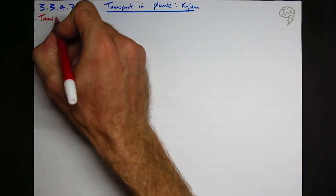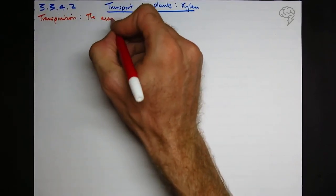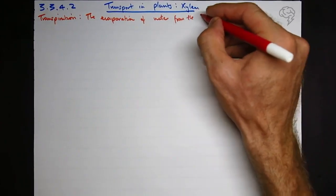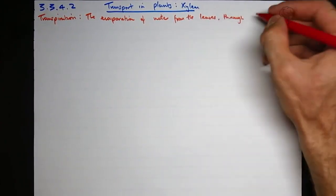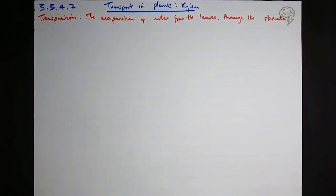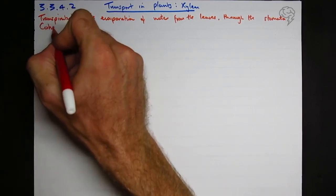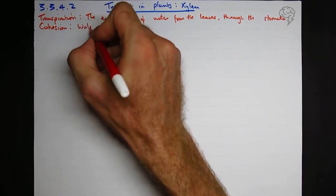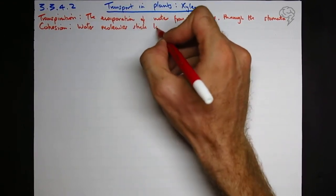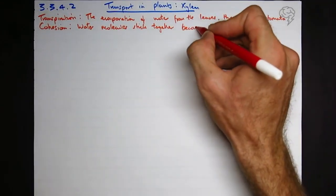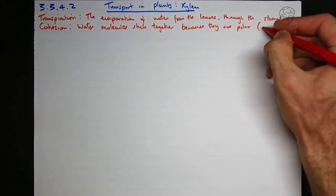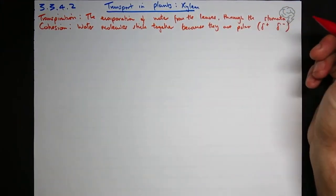So transpiration is the evaporation of water from the leaves, and it evaporates through the stomata. And cohesion. Cohesion is cohesive. It means like sticking together. So water molecules basically stick to each other because they're polar. They've got a delta positive end and a delta negative end, and if you need more information on that, then see the video on water.